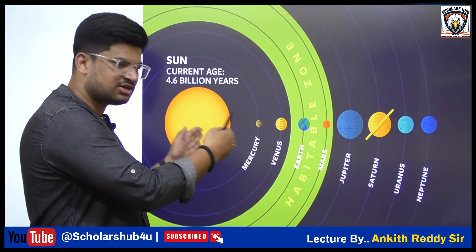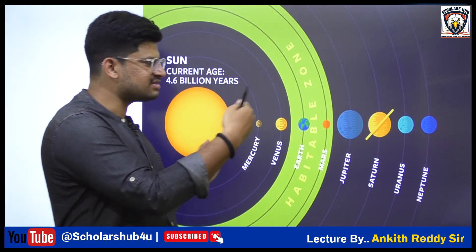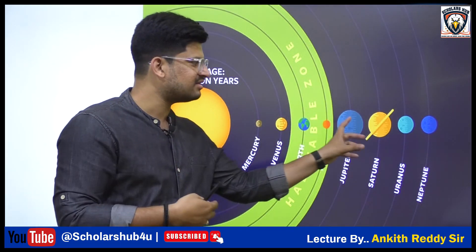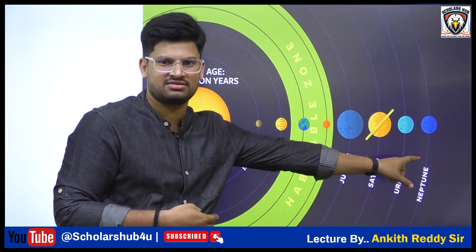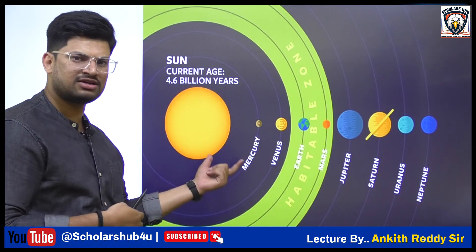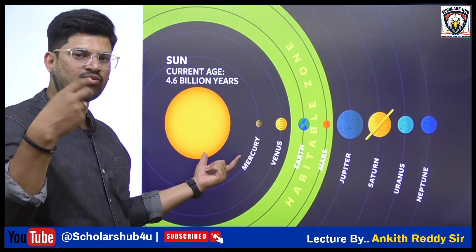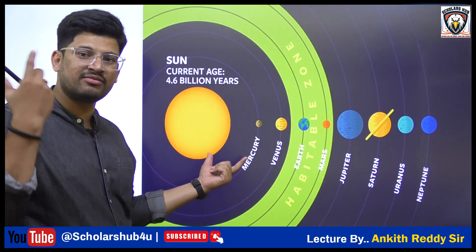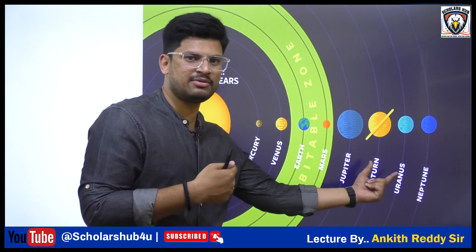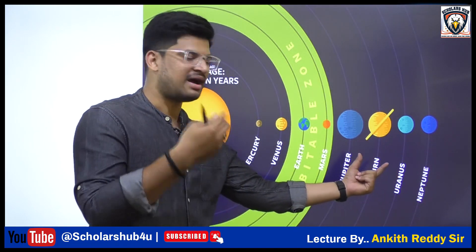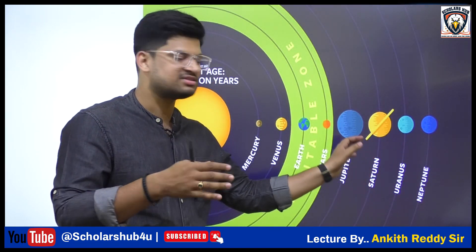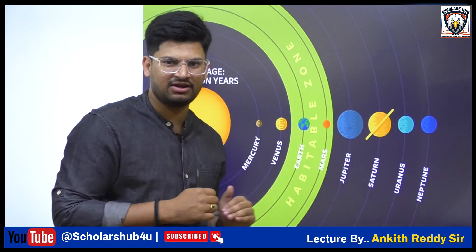The planets close to the Sun have water only as vapor. In the case of Uranus and Neptune, which are far from the Sun, the gases are in the form of ice because the temperatures are very low. So here the matter is in the form of ice.